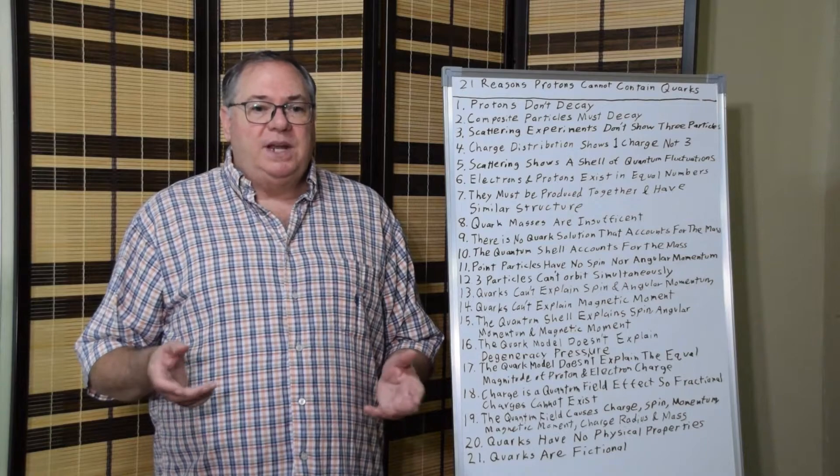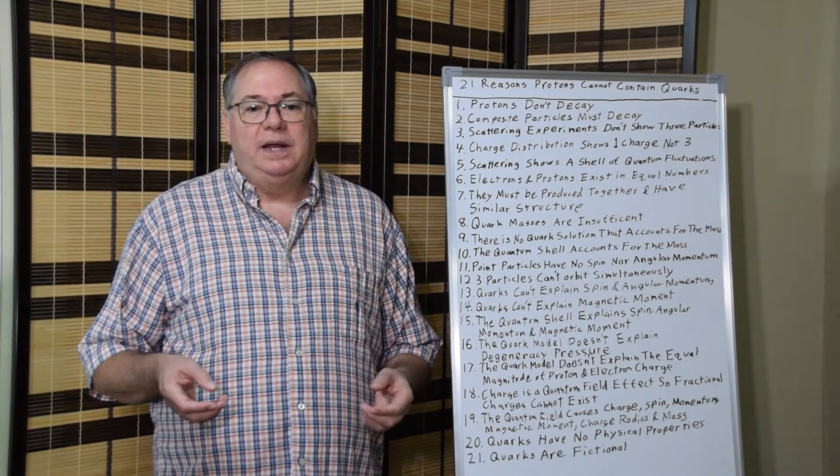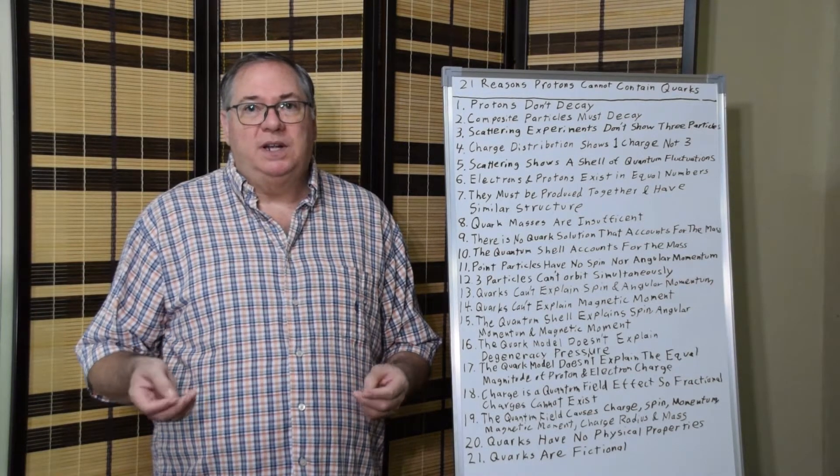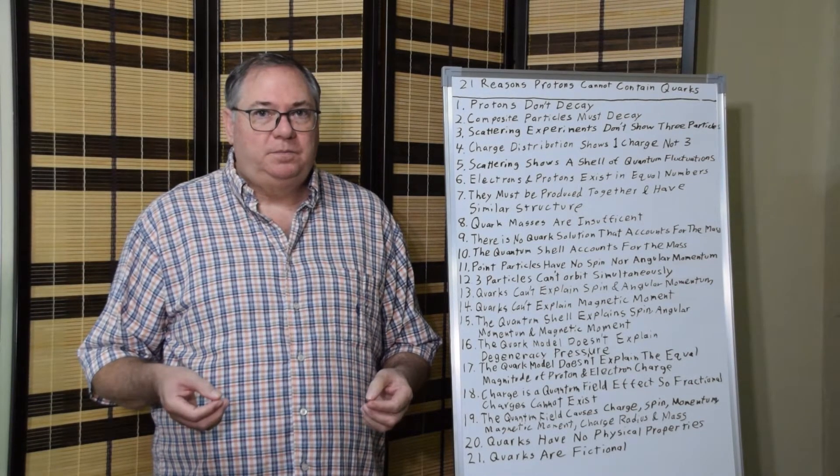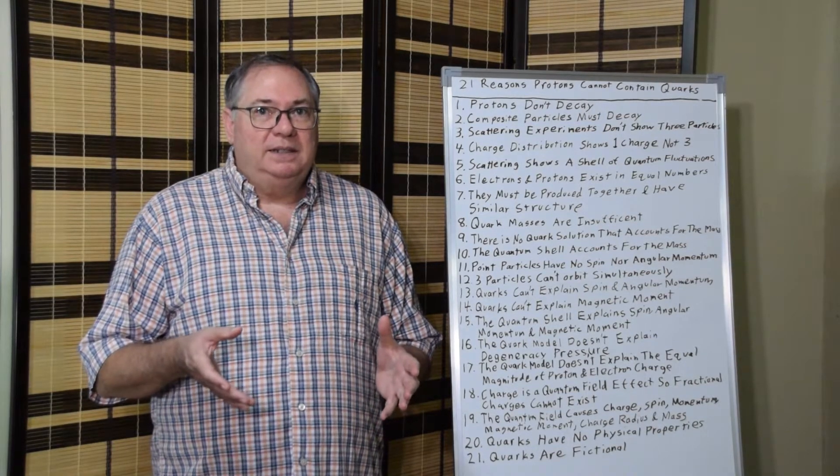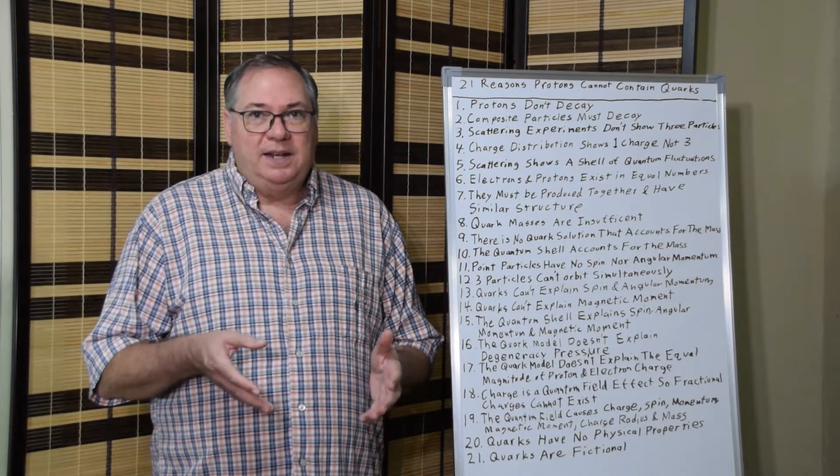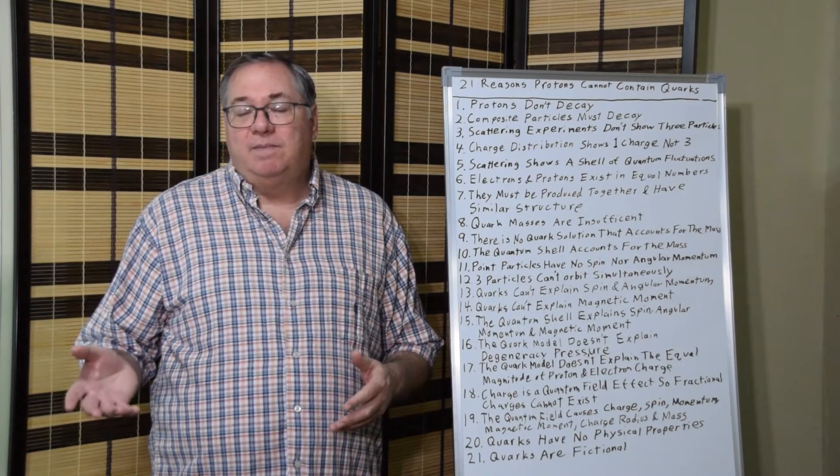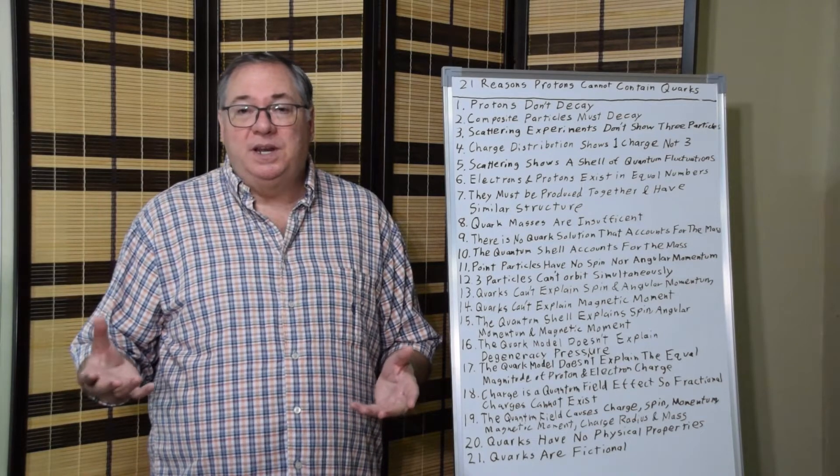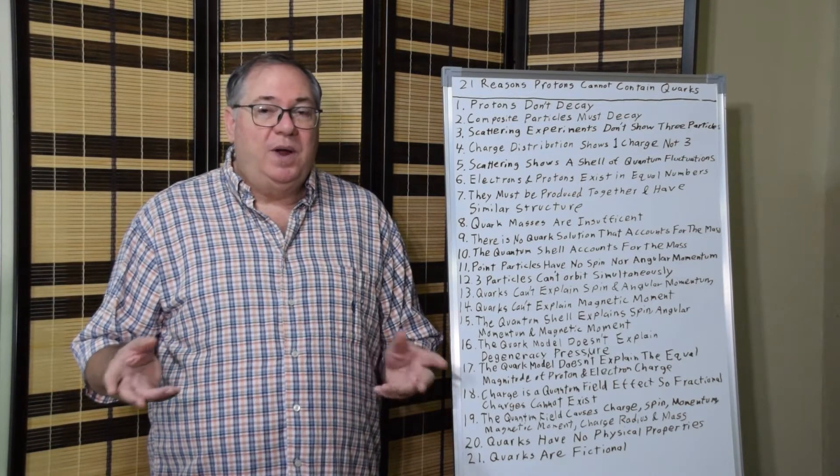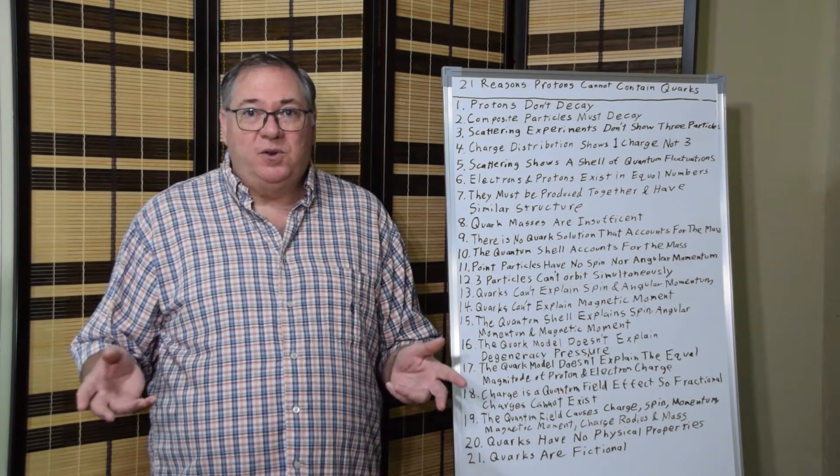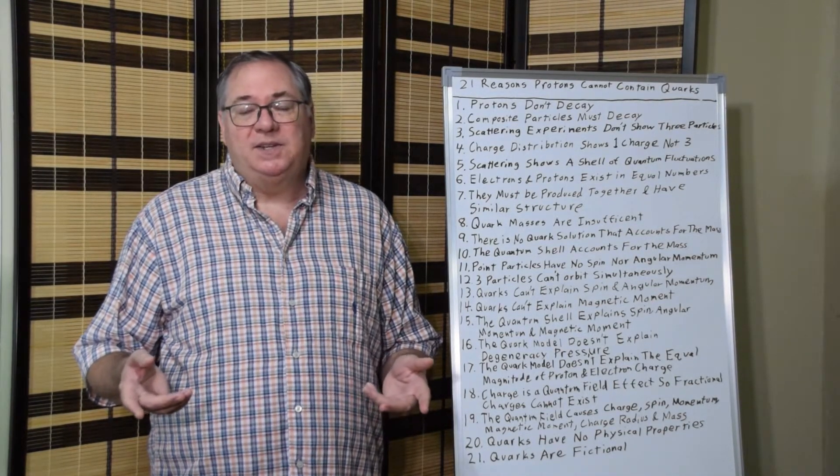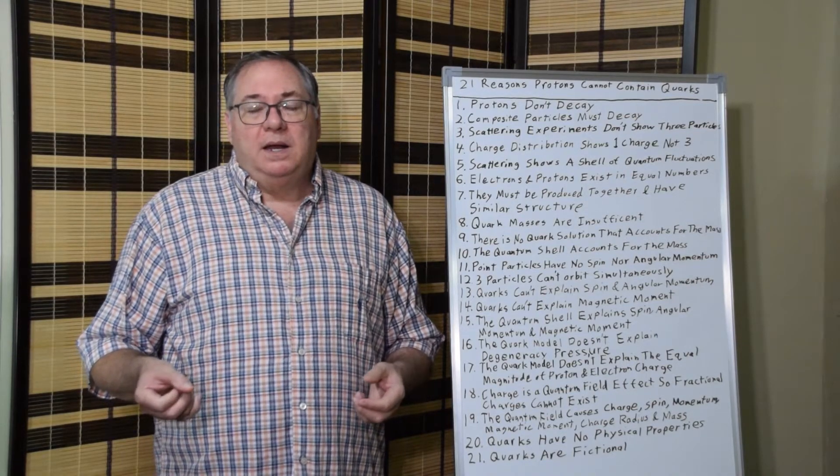So number 17, the quark model doesn't explain the equal charges of protons and electrons. In the proton quark model, they say that the quarks add up to the charge of the proton, while the electron, we have to have something totally different. And there's no way we have two totally separate ways of calculating charges that somehow magically turn out to be the same.